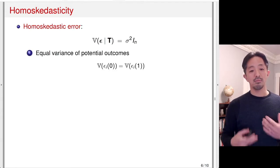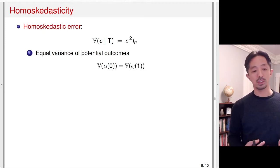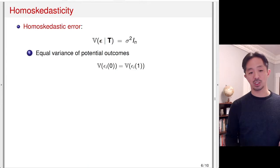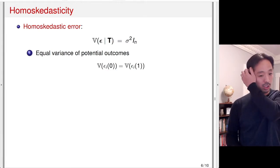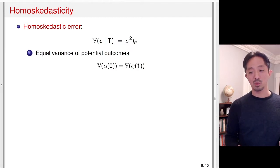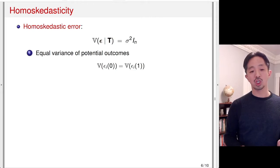We can dissect this assumption into two components. The first component is the equivalence of the potential outcomes: the variance of the potential error term doesn't depend on the treatment condition. So epsilon of 0 and epsilon of 1 — the error terms from the heterogeneous treatment linear regression model — have the same variance. The error term variance doesn't change regardless of treatment condition.